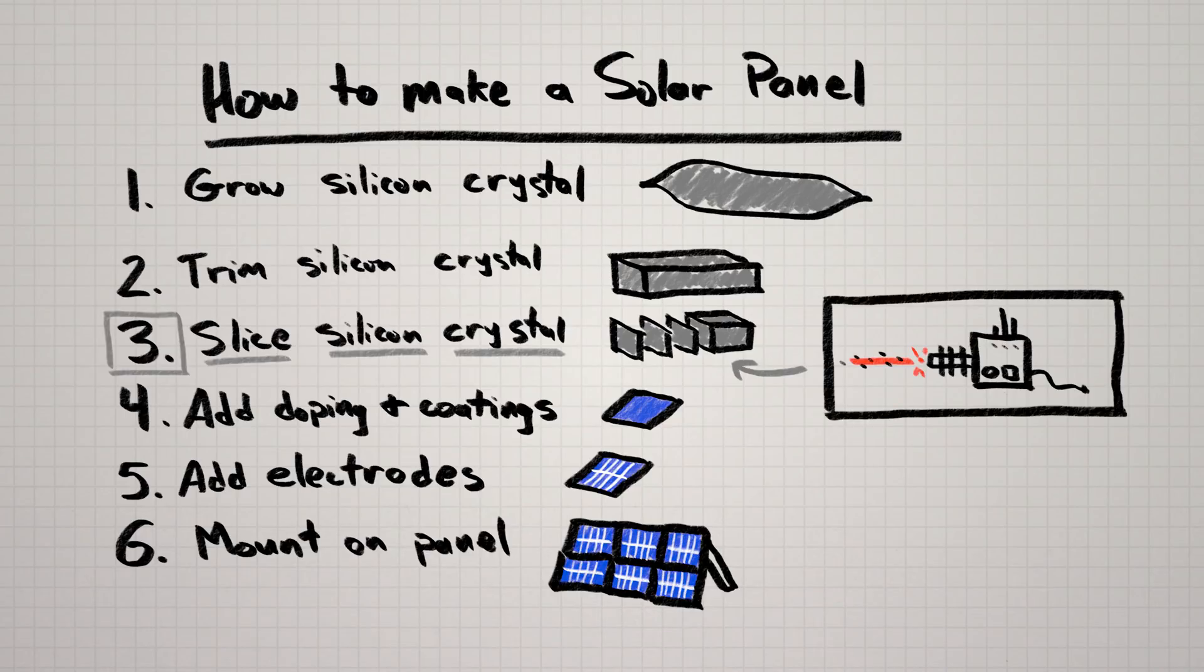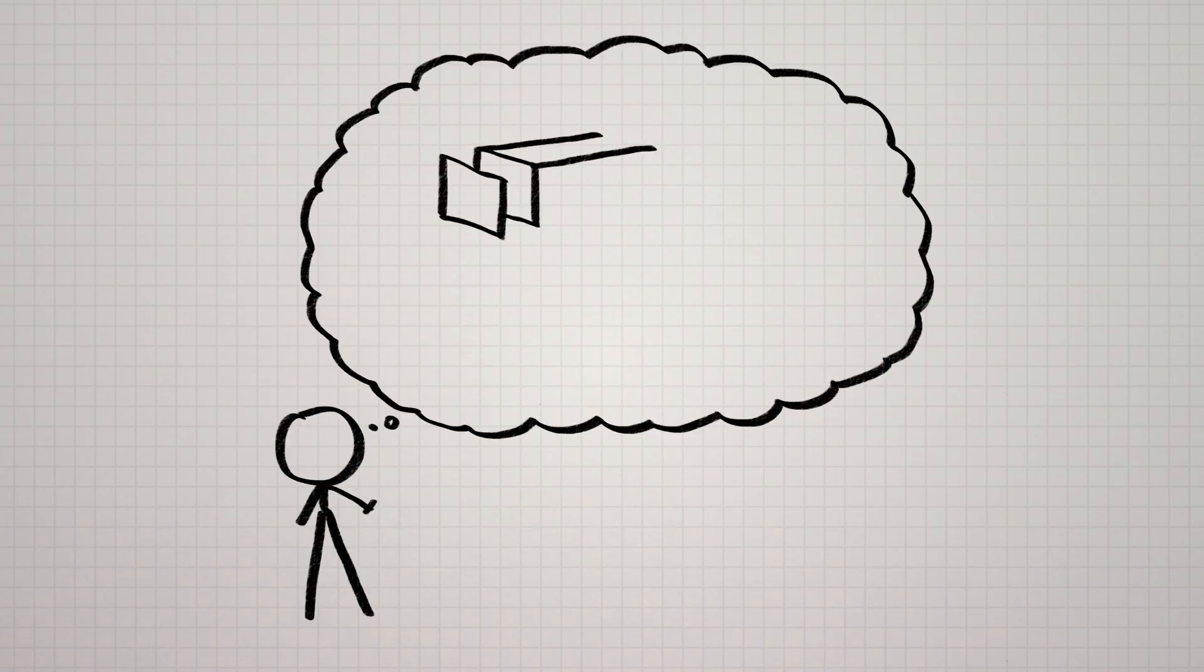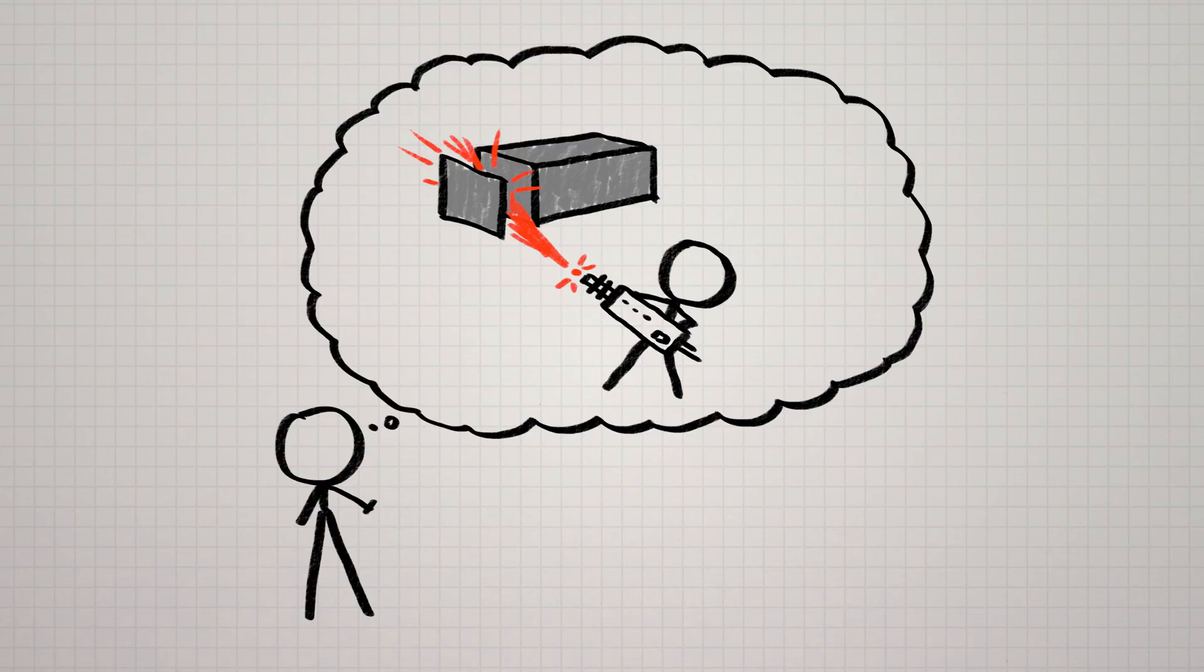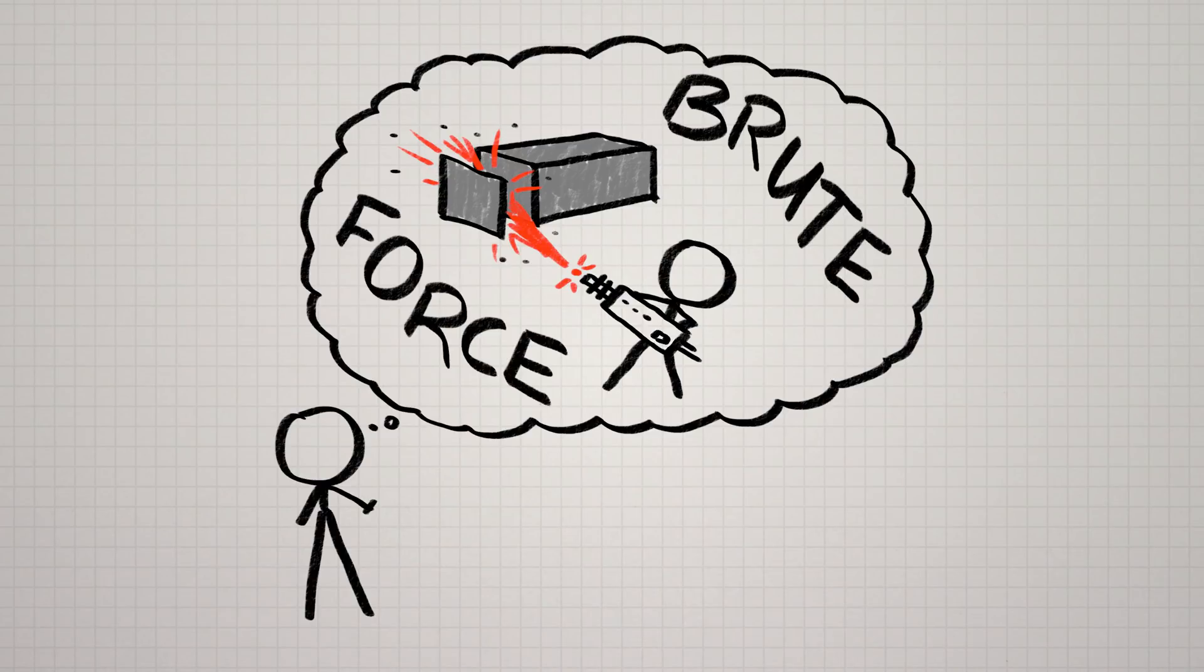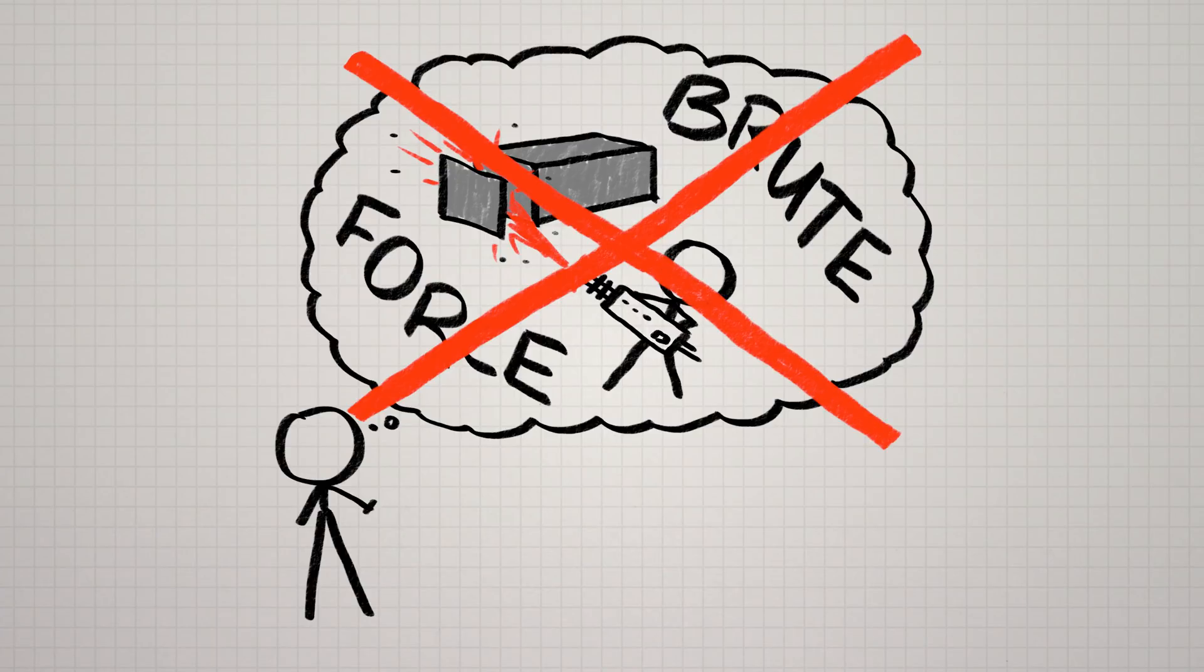Cutting silicon into the really thin wafers that are the key component of a solar panel. However, even this wasn't at all what I first thought, which was something like slicing through the crystal with a super powerful particle beam. That sounds awesome, but the actual technique is much less insane and much more clever.